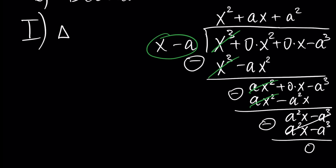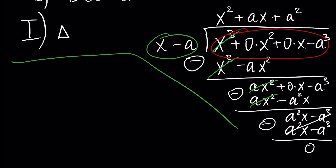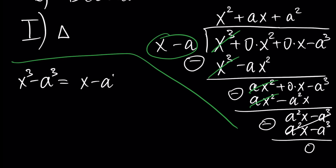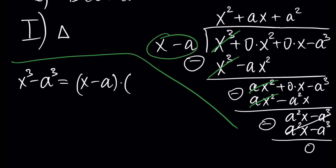This shows that x cubed minus a cubed is divisible by x minus a, and it can be represented as x minus a times the quotient polynomial. This quotient polynomial is equal to x squared plus ax plus a squared.